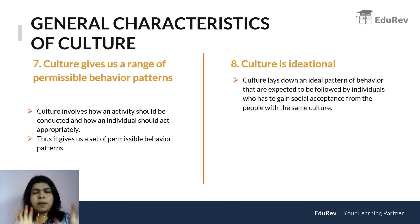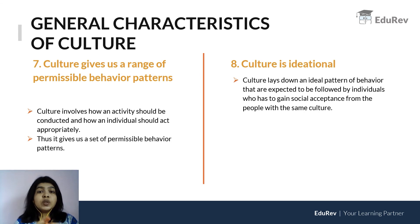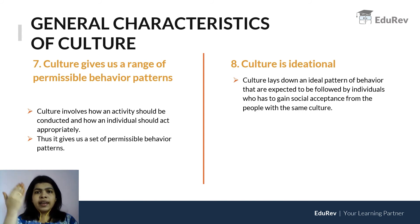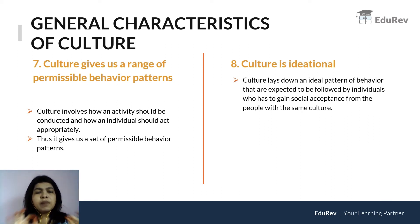Eighth, culture is ideational — culture says that when you see an elder, you have to bow to them and say Namaskar. This is a form of culture. It says these are the ideal patterns of behaviour: you should not be hitting another person, you should not slap or throw any physical abuses. Culture gives a set of ethical and normative behavioural patterns — permissible and ideal behavioural patterns are given out by culture.